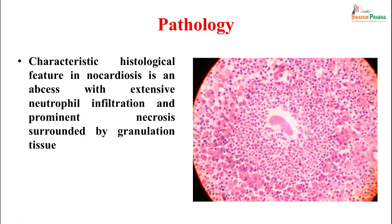Characteristically on histopathology, an abscess-like lesion produced by nocardia is seen with extensive neutrophilic infiltration and prominent necrosis surrounded by granulation tissue. This is a very typical appearance: central necrosis prominently surrounded by granulation tissue with a lot of neutrophilic infiltration.